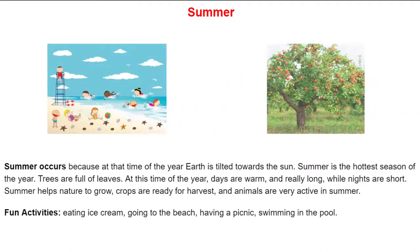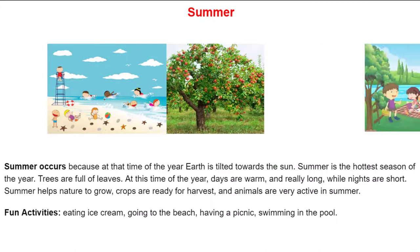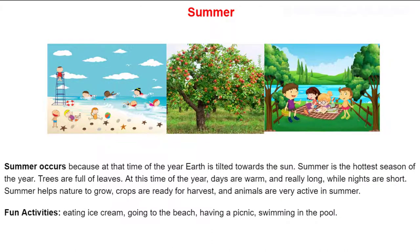Summer occurs because at that time of year the earth is tilted towards the Sun. Summer is the hottest season of the year. Trees are full of leaves, summer days are warm and really long while nights are short. Summer helps nature to grow and crops are ready for harvest.